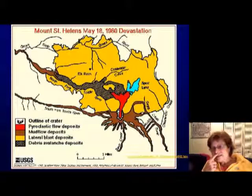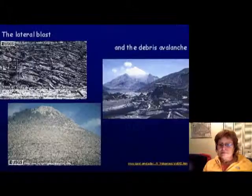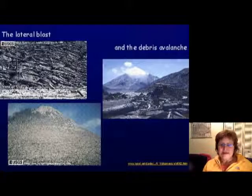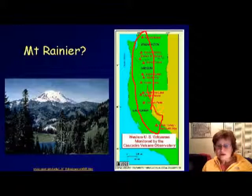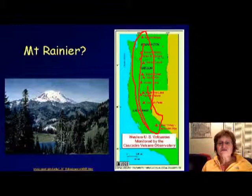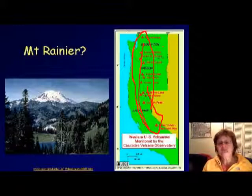This shows the devastation around Mount St. Helens. Many volcanoes in the region are dormant — not extinct — and could erupt at any time. One of the worst risks is Mount Rainier, right next to Seattle and Tacoma with hundreds of thousands of people nearby who would be very difficult to evacuate, so it is closely monitored.